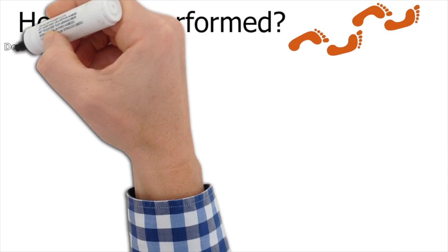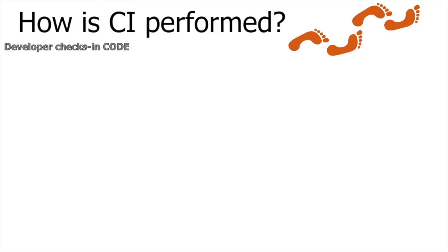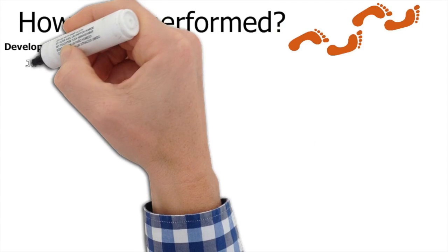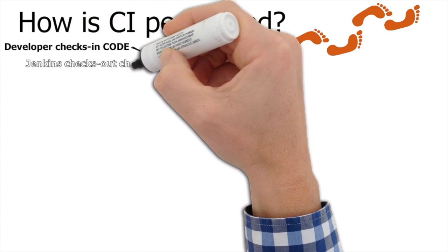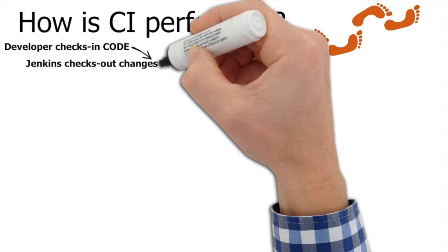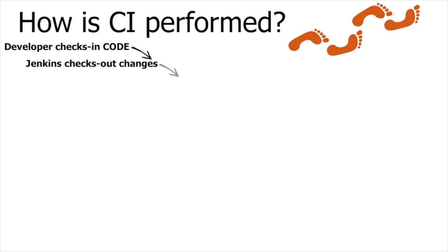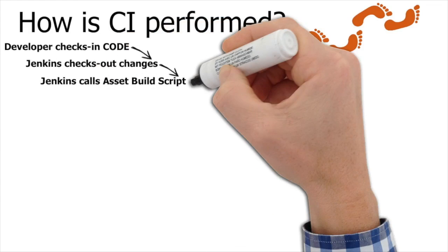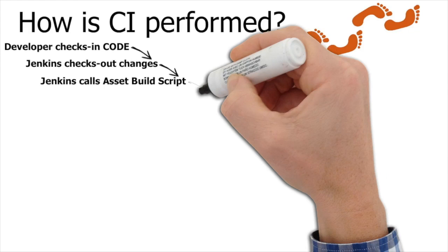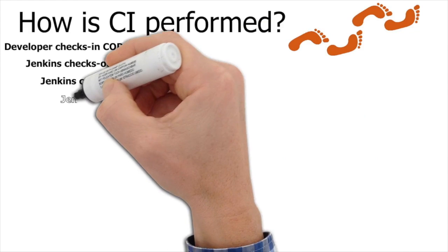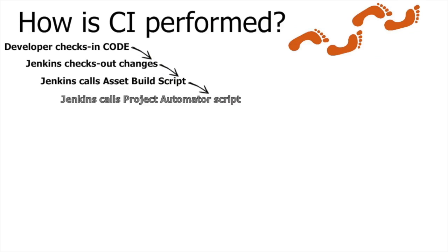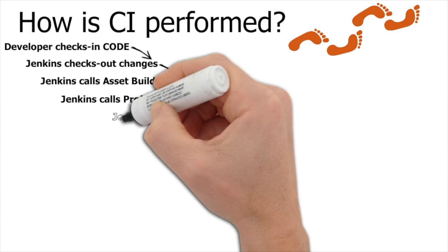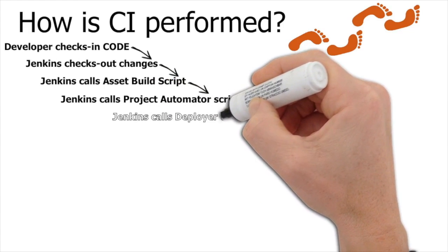Now let's see how continuous integration is performed, step by step. Developers check in their code — they write code or fix an issue — and the Jenkins system checks out the changes that have been checked in by the developers. Jenkins then calls the asset build script, which is maintained by the DevOps guys. Jenkins calls the project automation script.